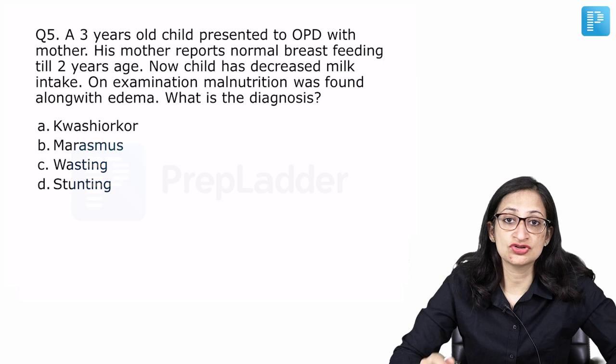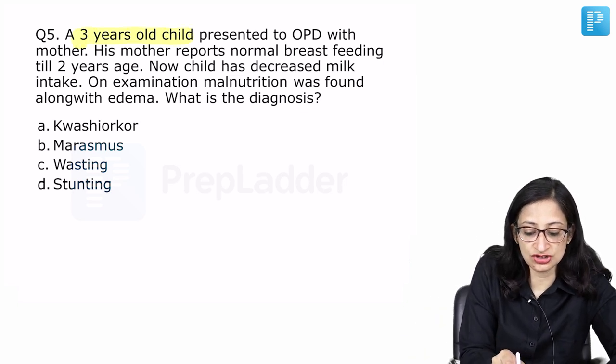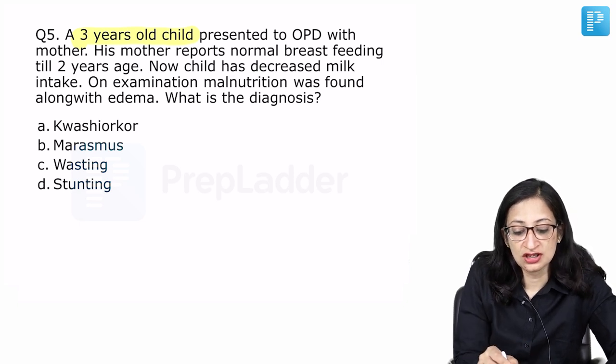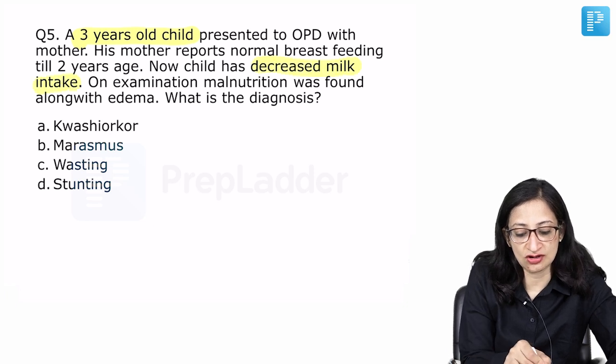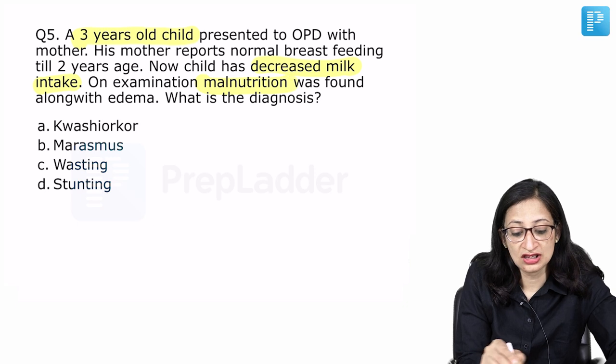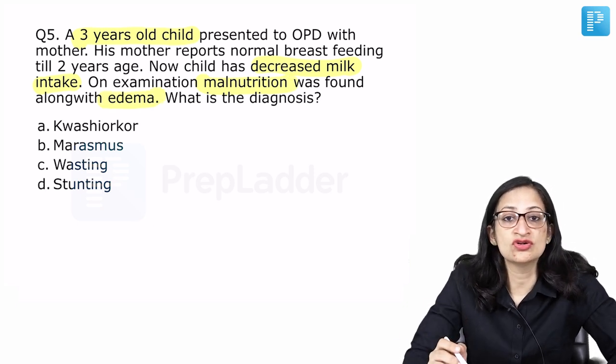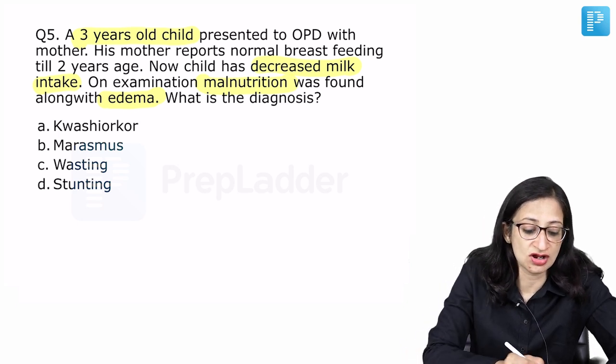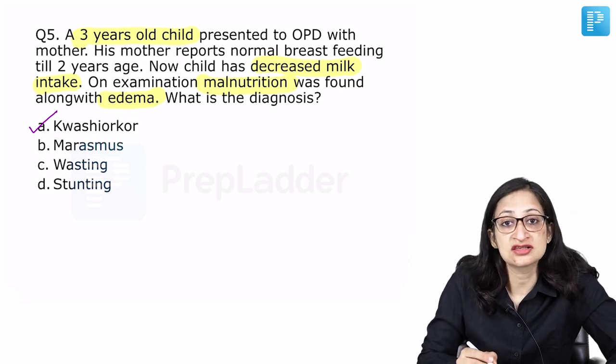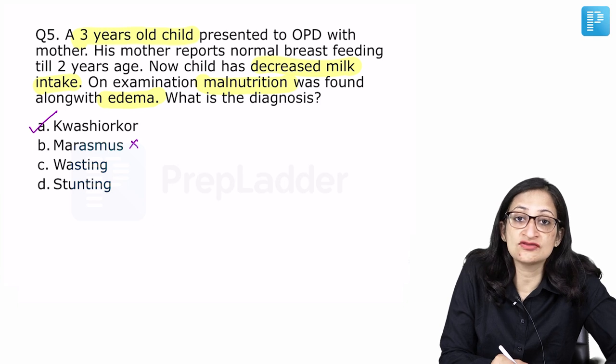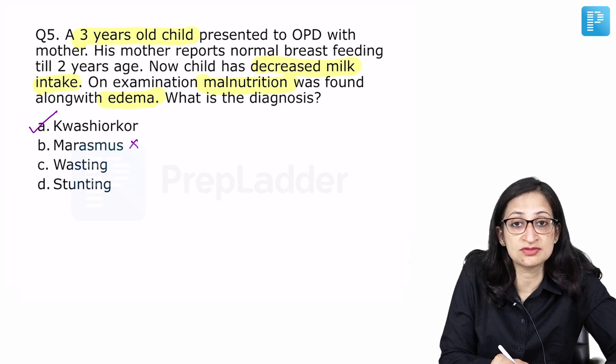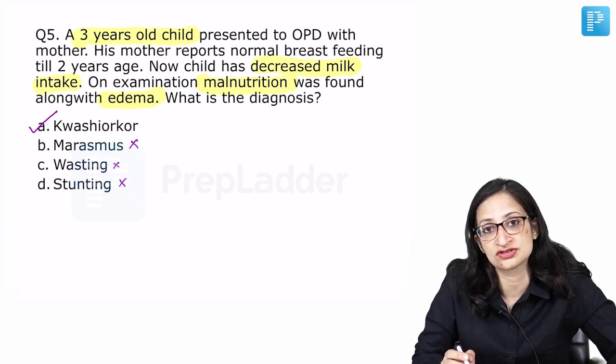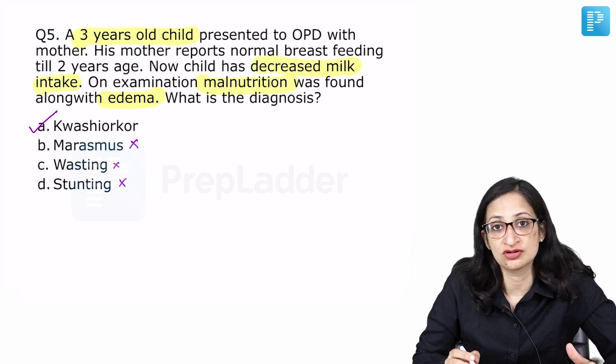Moving on to the next question, again a question on malnutrition. What we have here is a 3 year old child who presented to OPD with his mother. His mother reports normal breastfeeding till 2 years of age. Now, the child has decreased milk intake. On examination malnutrition features were there along with edema. What is the diagnosis? We know if a child is having poor feeding, apathy, lethargy, malnutrition along with edema then your diagnosis is kwashiorkor. In marasmus, edema is not present and wasting and stunting we already saw the definitions which are very specific. Kwashiorkor is the best answer for this question out of the given options.